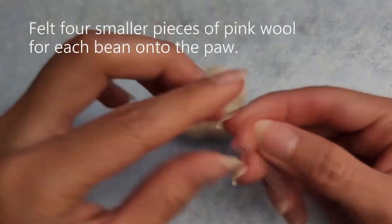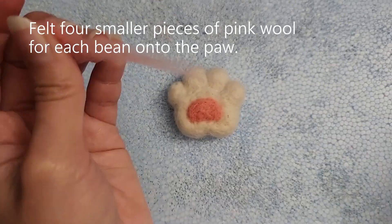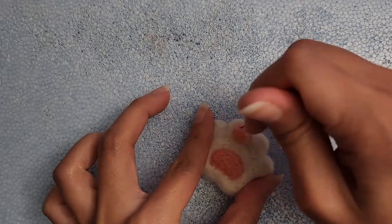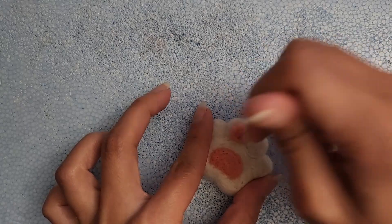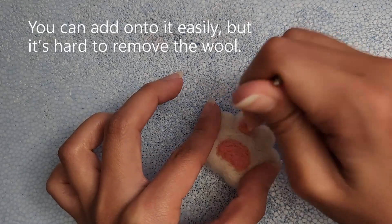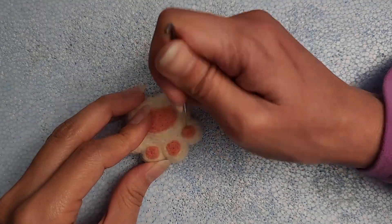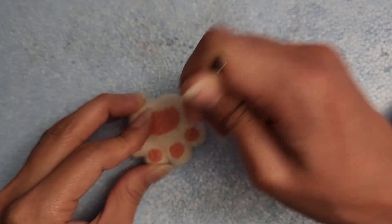Felt four smaller pieces of pink wool for each bean onto the paw, similar to the previous step. It's better to take small pieces of wool first and then add more if you want. You can add onto it easily but it's hard to take it away after felting them in there. You can always reshape different areas to your liking.